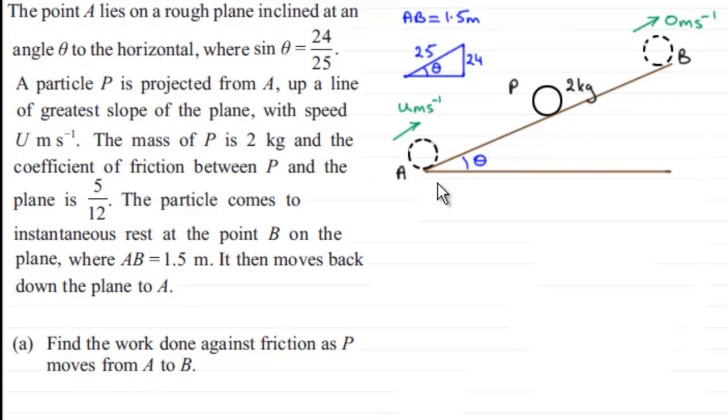It then moves back down the plane to A. And in the first part of this question, we've got to find the work done against friction as P moves from A to B.